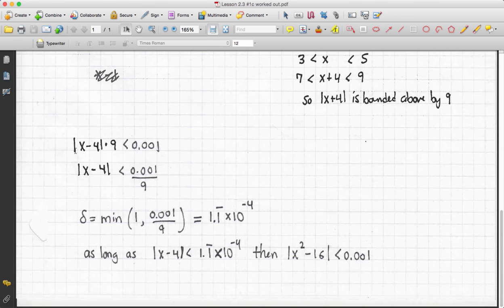So, I can say the absolute value of x minus 4 times 9 is less than 0.001, and now divide both sides by 9. Absolute value of x minus 4 is less than 0.001 divided by 9.